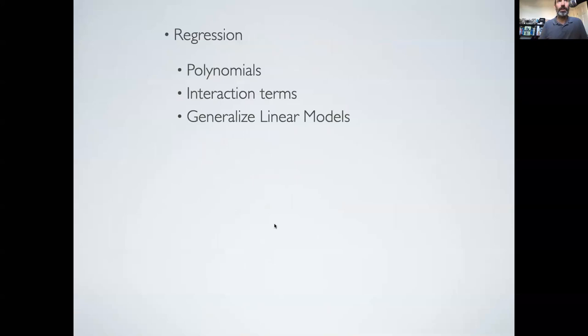We then moved on to more advanced regression models, dealing with things like polynomials and interaction terms, and then generalized linear models, where we relaxed the assumption that the error was normal and entertained different probability distributions, such as the binomial and the Poisson.